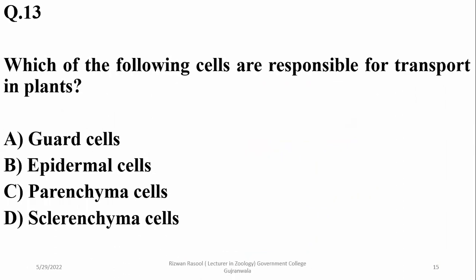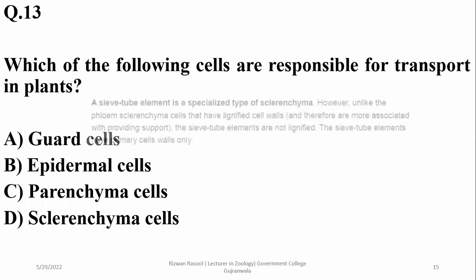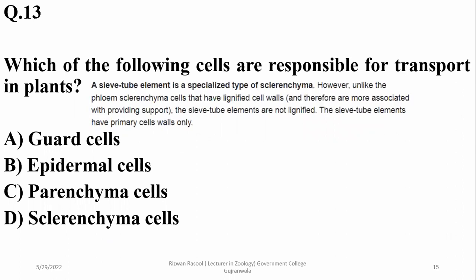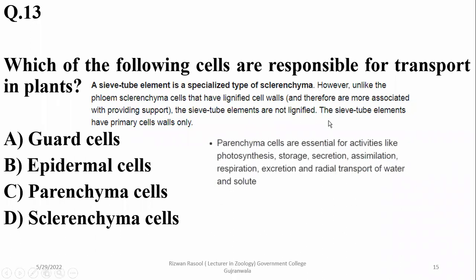Question thirteen was about which cells are responsible for transport in plants. Transport cells include xylem and phloem cells, related to sclerenchyma cells. A sieve element is a specialized type of sclerenchyma responsible for vertical transport, like phloem transport. Associated parenchyma cells help with lateral or radial transport in xylem and phloem. So the right option is D (delta).